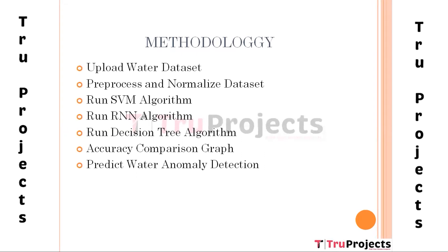To implement this project we have designed several modules. The first module is Upload Water Dataset, used to upload the water dataset to the application. The second module is Pre-processing and Normalize Dataset. The dataset often contains missing and non-numerical values, so by applying a pre-processing technique we replace non-numerical values with integer IDs.